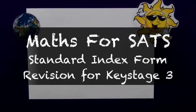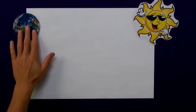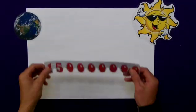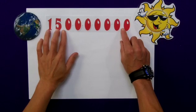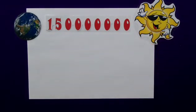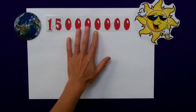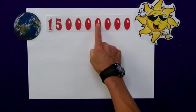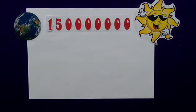Standard index form is a way of writing huge numbers or very small numbers in a format we can apply more easily to our maths. If we consider the Earth's distance relative to the Sun, it is approximately 150 million kilometres. To use this number day in and day out could come with problems, in that I could miscount how many zeros I have and therefore my calculations are wrong.